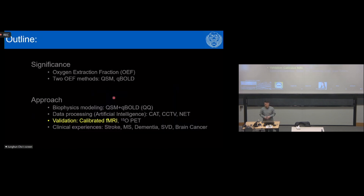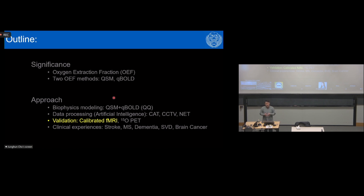So far I've talked about creating the novel biophysics model QQ, and introduced three data processing algorithms — CAT, CCTV, and NET — to solve this model robustly. Now I'll discuss the validation of our method, comparing QQ with the well-investigated calibrated fMRI method and the reference standard 15-O PET. This validation is critical for routine clinical application.